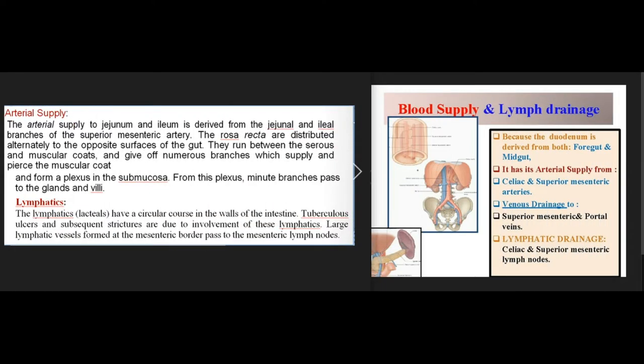The arterial supply to the jejunum and ileum is derived from the jejunal and ileal branches of the superior mesenteric artery. The vasa recta are distributed alternately to the opposite surfaces of the gut. They run between the serous and muscular coats and give off numerous branches which supply and pierce the muscular coat, forming a plexus in the submucosa. From this plexus, minute branches pass to the glands and villi. The lymphatics, or lacteals, have a circular course in the walls of the intestine. Tuberculous ulcers and subsequent strictures are due to involvement of these lymphatics.